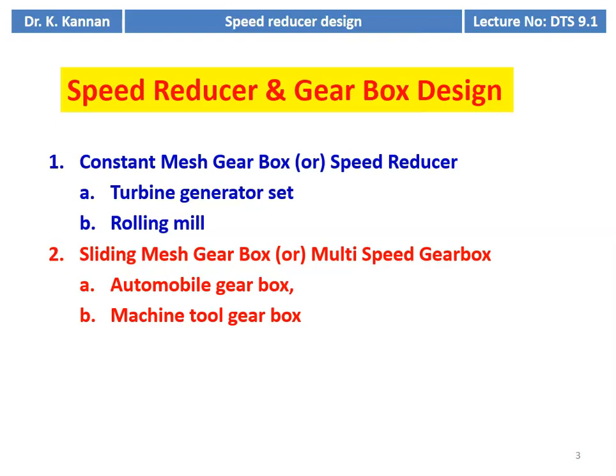The speed reducer is also found in many applications. Constant mesh gearboxes, or speed reducers, are used in turbine generator sets, rolling mills, and all applications requiring a constant output speed — normally to run the application at a lower speed than the motor. The sliding mesh or multi-speed gearbox allows changing of output speed through sliding and meshing action, where gears engage with another gear to produce multiple output speeds. Examples are automobile gearboxes and machine tool gearboxes.